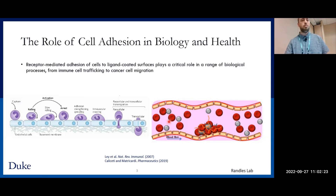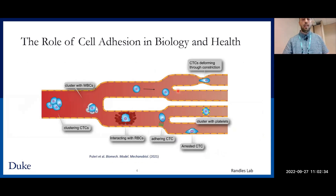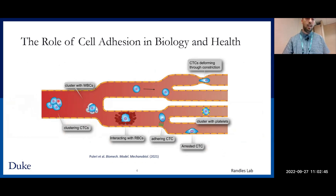Cell adhesion plays a role in many biological applications: immune cell trafficking, cancer cell migration, and here we have an example of blood clot formation mediated by platelets. The main motivating application in our case is tumor metastasis, where a cluster or single circulating tumor cell in the bloodstream breaks off from a primary tumor site. It travels downstream and once it reaches the capillaries where the vessel narrows, the cell forms adhesive contacts with receptors on the endothelium, arrests, and then invades the new tissue.